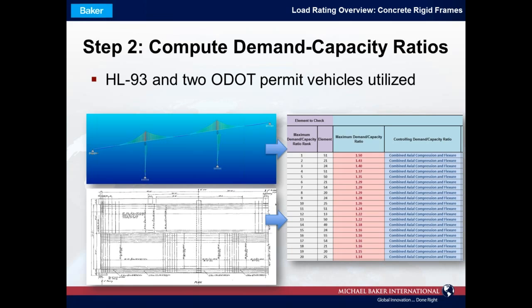Once we place these loadings in the model and run our one-foot-width strip model, we extract inventory-level forces, which go into a code check spreadsheet. This spreadsheet takes both the output forces from the model and all section properties for the actual bridge — rebar properties and cross-section geometry — then applies the appropriate AASHTO LRFD flexure, shear, and combined axial force and flexure equations to compute demand-capacity ratios. The spreadsheet sorts these ratios for each element along the structure, allowing us to determine controlling points of interest.